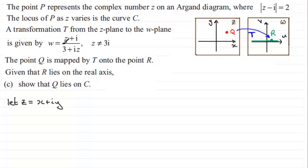So I'm going to form an equation based on the fact that the imaginary part is equal to zero. And hopefully it will take us to this particular curve. And remember this particular curve is a circle with a radius of 2 and the centre is at 0, 1. So let's start then by substituting this into our equation here.